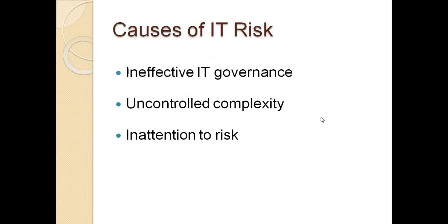Now to begin with, let's review the three main causes of IT risk. Number one is ineffective IT governance. What this means is there's an absence of appropriate structures and processes for business involvement in IT investments and decisions. Without appropriate business involvement in IT decision making, IT managers can make incorrect assumptions about which risks matter most to the business.